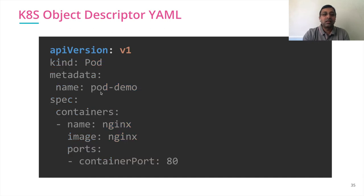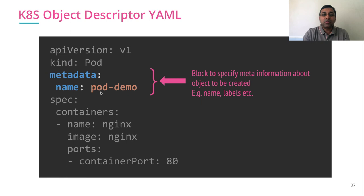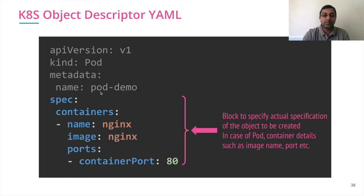Let's look at this at a high level. The first part in the descriptor is the API version — depending on the API version, your specification details might vary. You specify which kind of object you would like to deploy in your Kubernetes cluster; this is called kind and it specifies the object type. The metadata part specifies information about the object, with the mandatory field being name, which uniquely identifies your object, along with other attributes like labels. The specification block is used to specify the actual details and parameters about your object — for example, in the case of a pod, the image to deploy as part of the container and which port to expose.